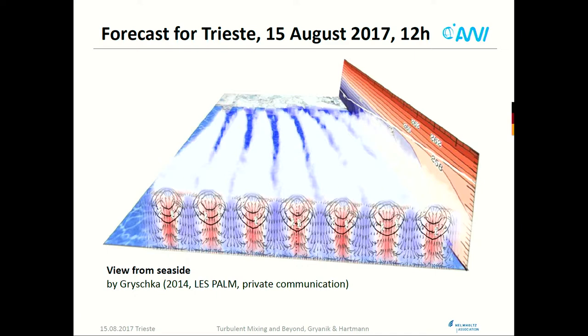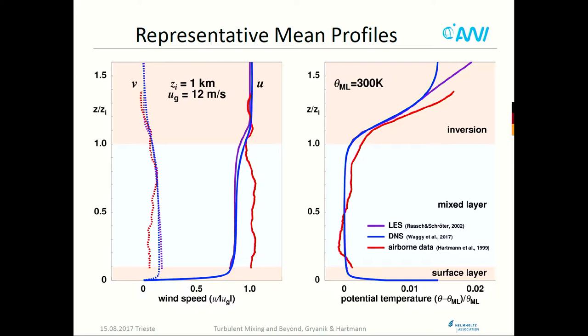I will show it in more detail. Red is updraft, blue is downdraft — this is a typical situation. This is how it looks in the mean fields.